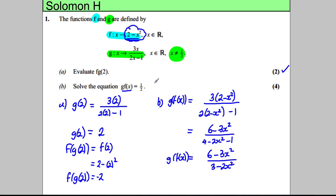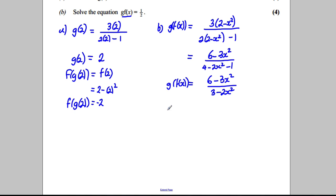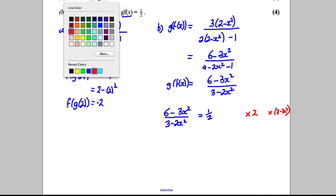Now we're trying to solve g of f of x when it's equal to a half. Let's make that equal to a half, expand it, and solve the equation. 6 subtract 3x squared divided by 3 subtract 2x squared—we're going to make that equal to a half. What I'm going to do is multiply both sides by 2 to make this a 1, and I'm also going to multiply both sides by 3 subtract 2x squared to get rid of this on the denominator.